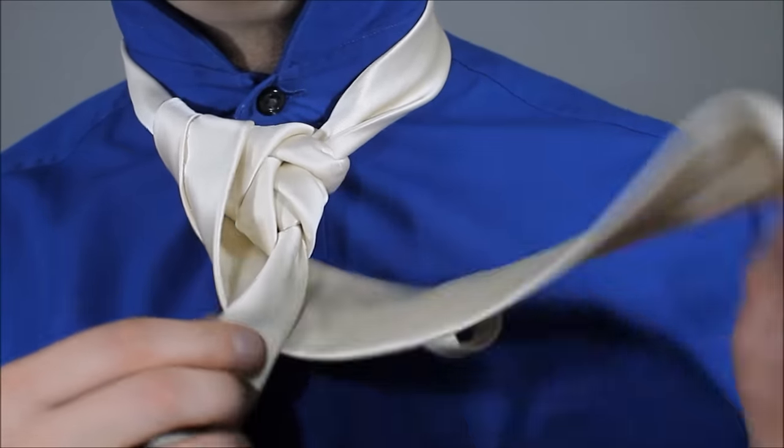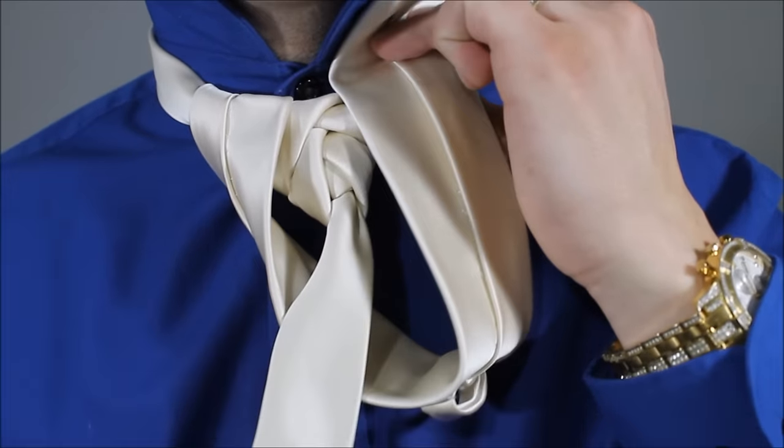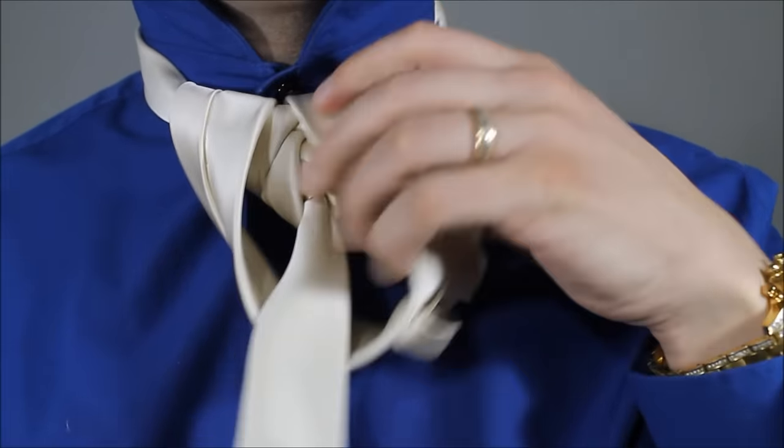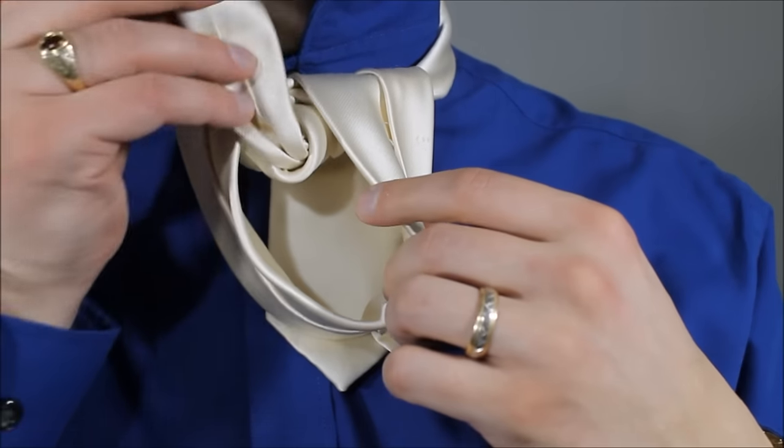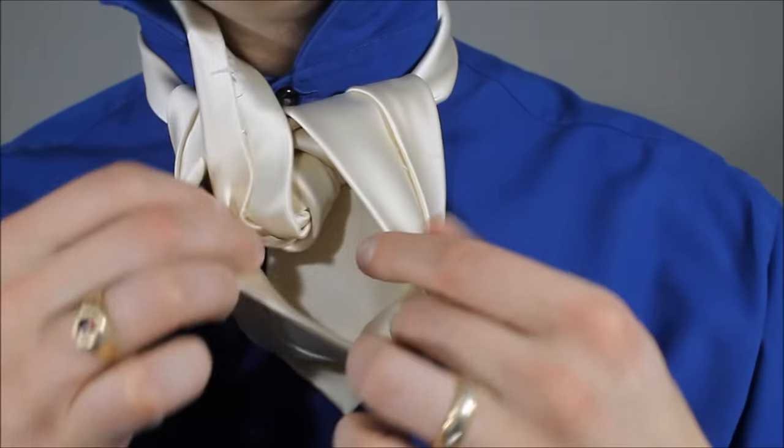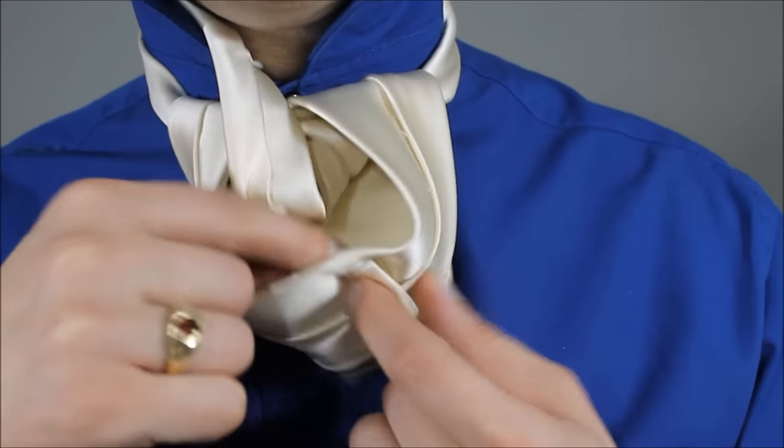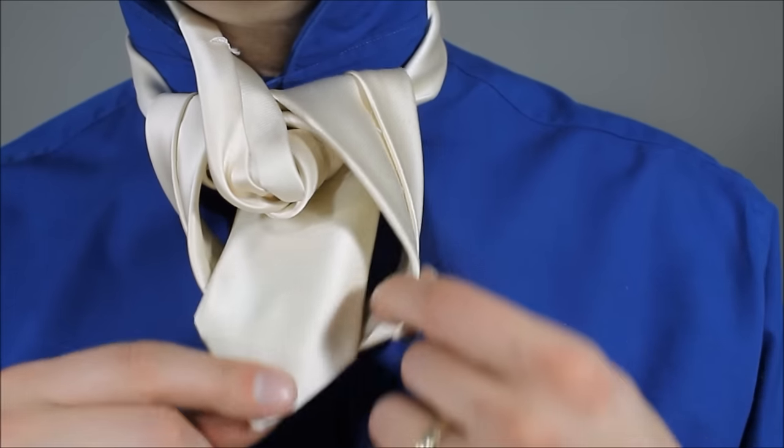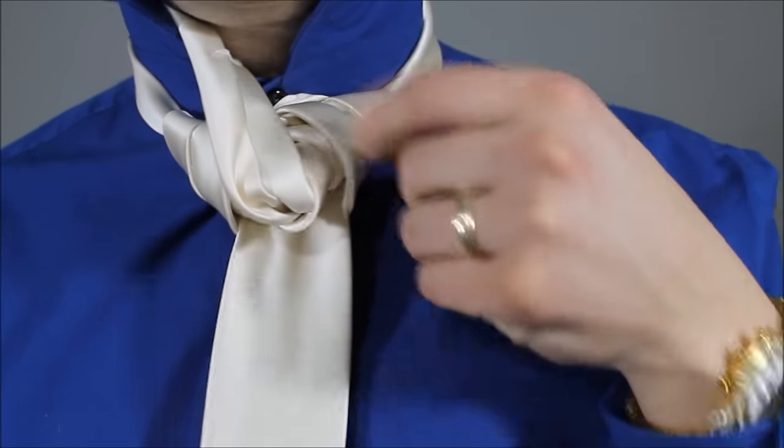Okay, now taking the big end, feed it around the back, and it's going to come up through the top of your necktie and back down. So, you're going to take this big end through the loop and proceed to tighten that.